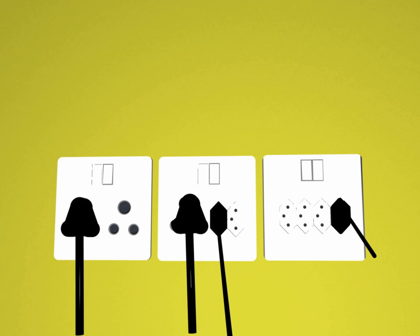IEC 60906-1 is an international standard designed to provide a standard for a safe, compact and practical 16A 250V AC system of plugs and socket outlets that could be accepted by many countries as their national standard, even if not in the near future.